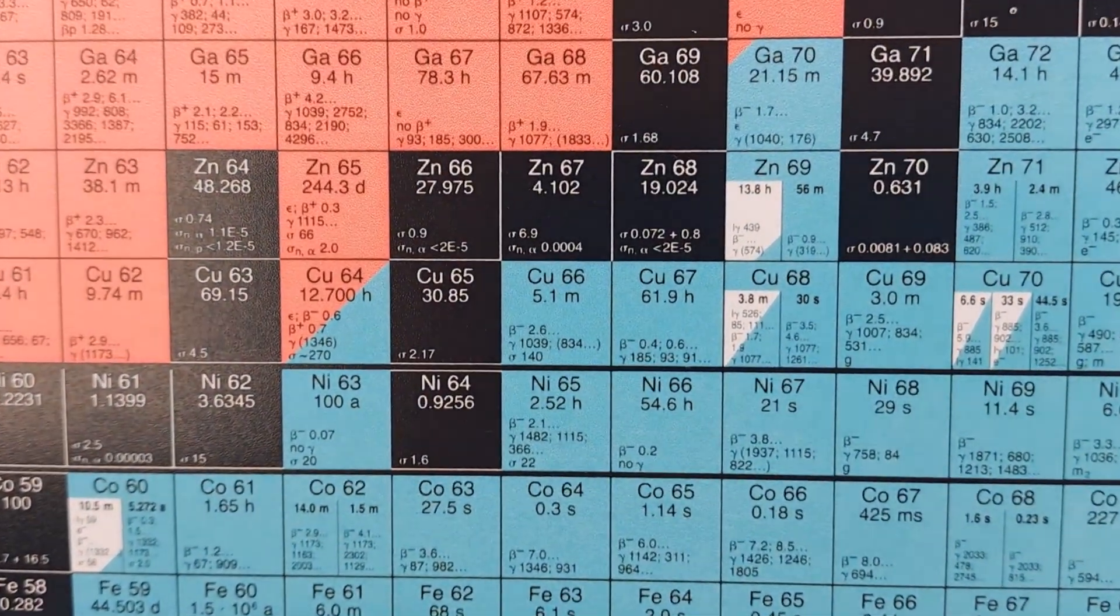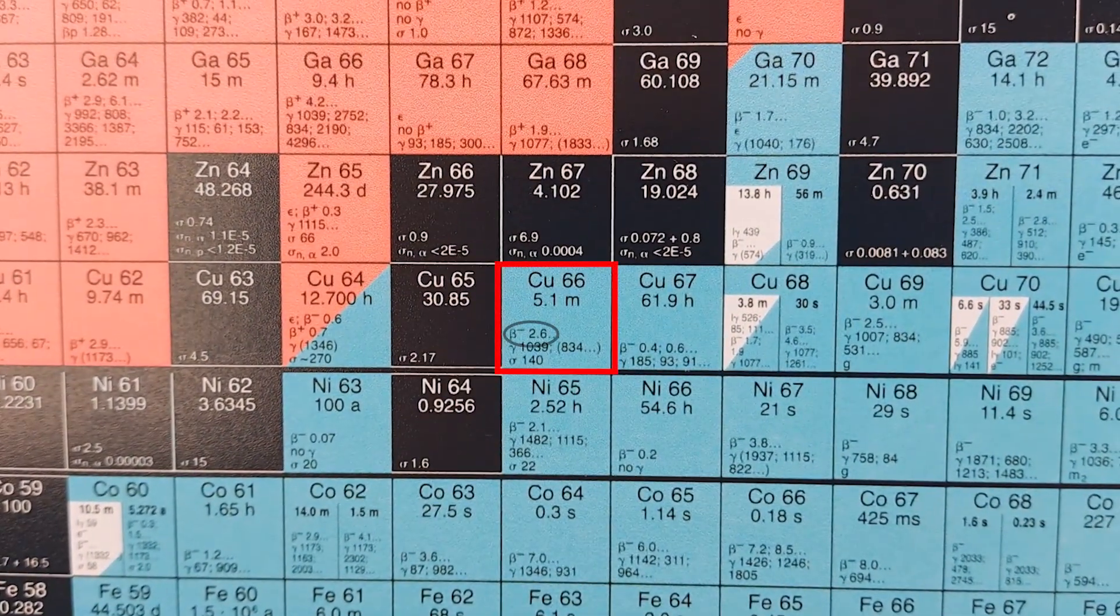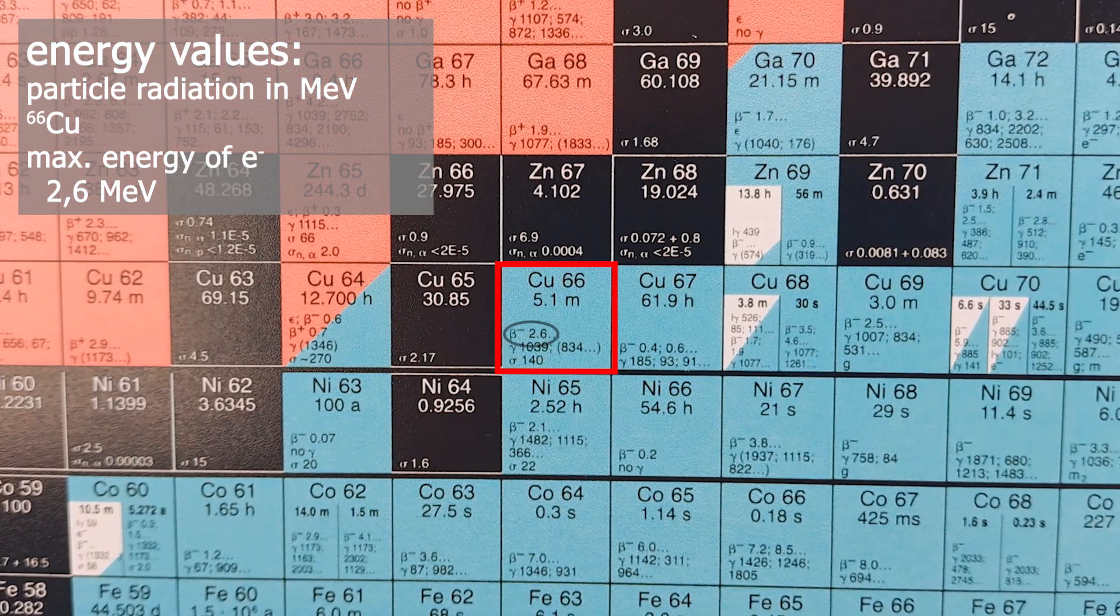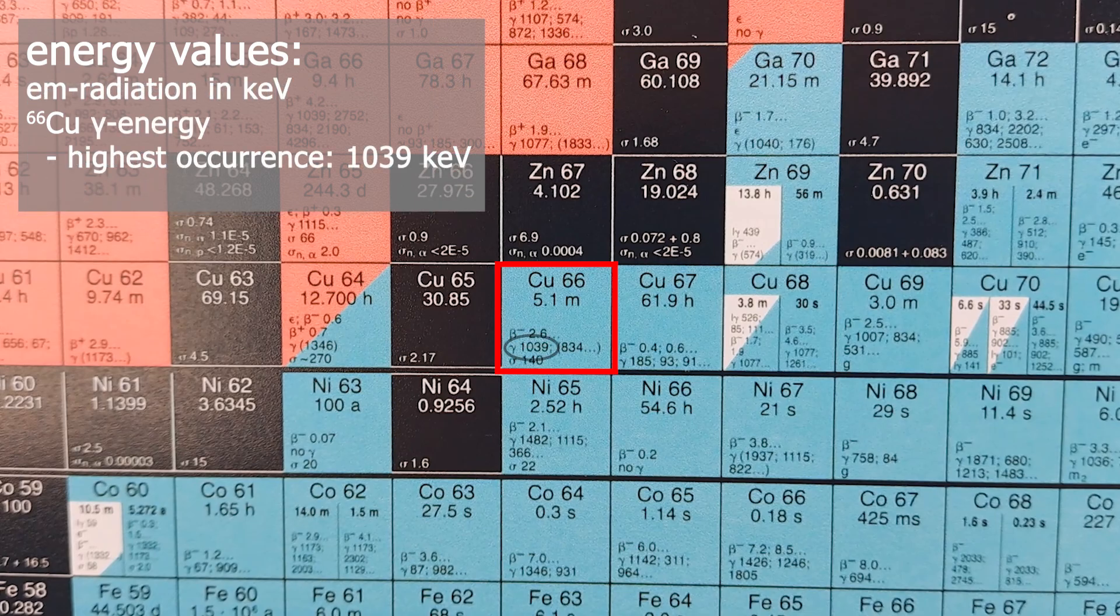Let's take a look at the radioactive copper 66. We can see 2.6 for beta minus and 1039 for gamma. For particle radiation like alpha, beta plus or beta minus, the number represents the maximum energy of the particle in mega electron volts. For electromagnetic radiation like the gamma quanta here, the energy is understood in kilo electron volts.